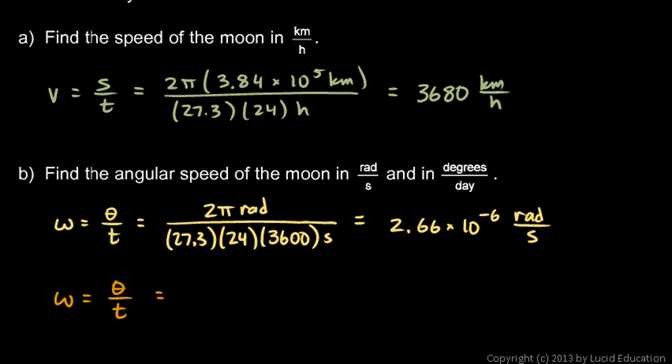Well, one rotation is 360 degrees, and it does that in the time of 27.3 days. So, that will give me degrees per day. I just divide. 360 divided by 27.3 comes out to 13.2 degrees per day.